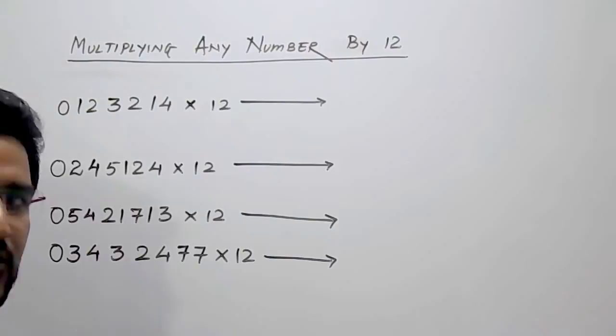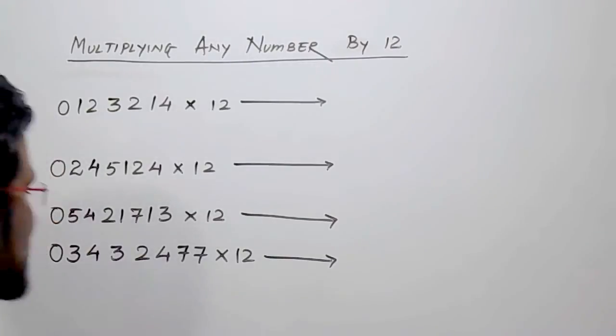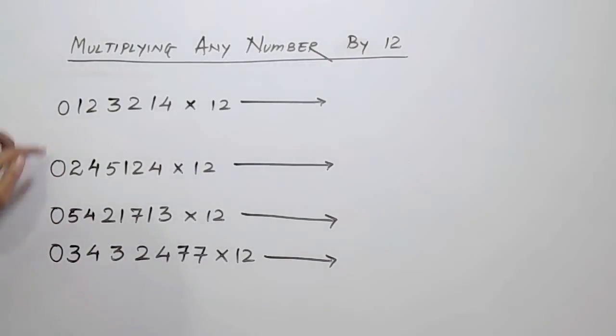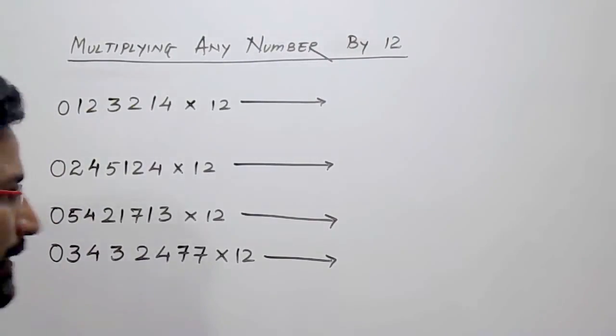The first thing that you have to do is just write 0 at the beginning of that number.